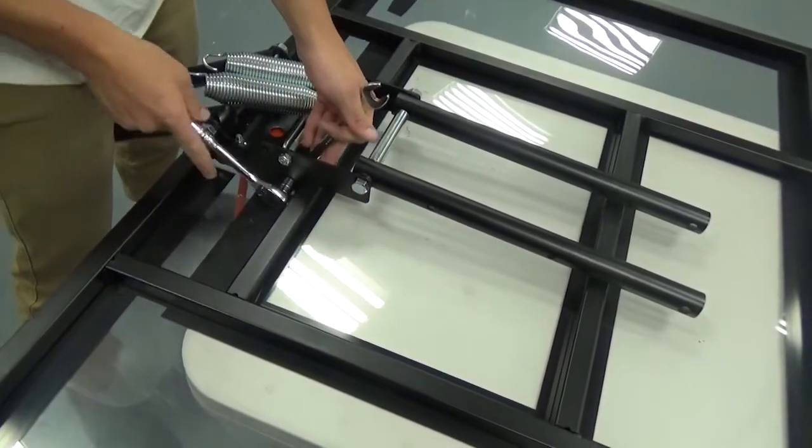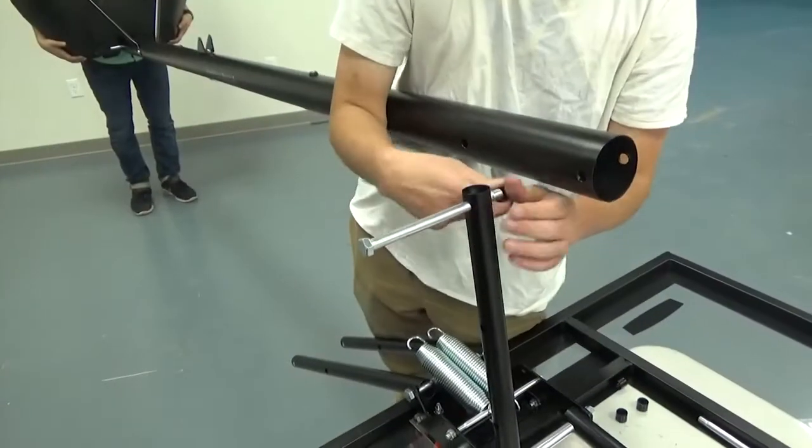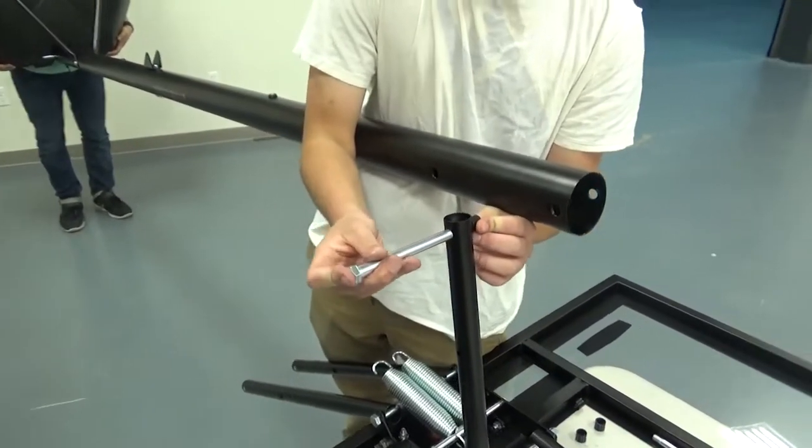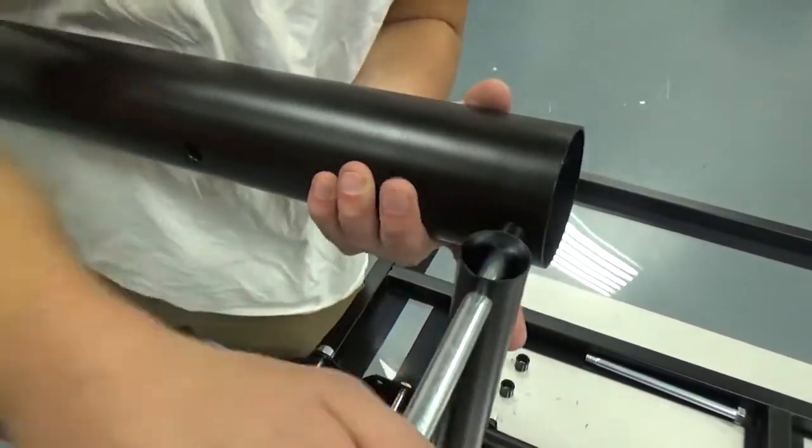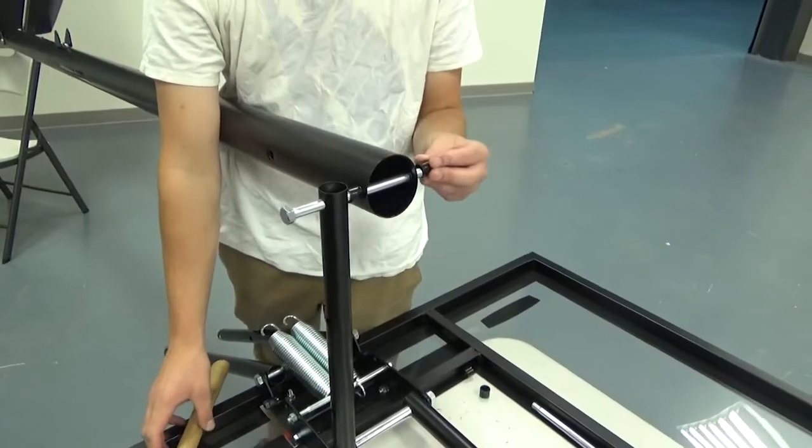Once the extension arms are secured, have one adult hold the pole assembly steady and line up the top of the pole with the backboard. Secure each of the extension arms to the pole with the hardware provided.